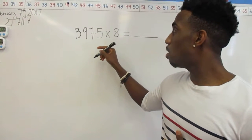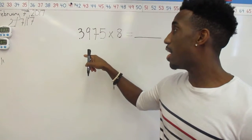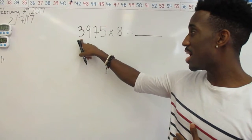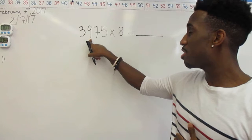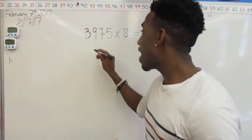And with this model, all we're going to do is multiply by place value. So I'm going to multiply 8 by 3,000, then 8 by 900, 8 by 70, and then 8 by 5, then I'm going to add it all up.